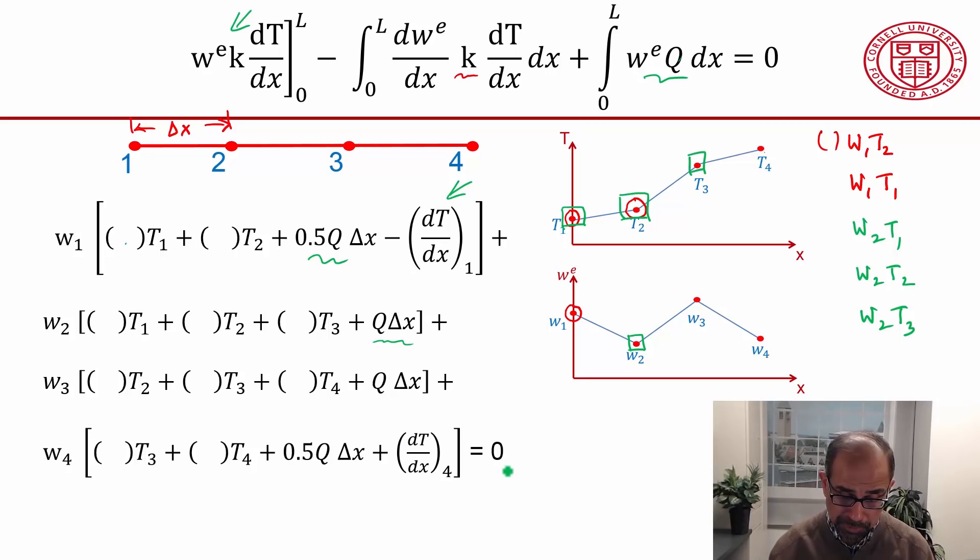We're trying to satisfy this for arbitrary w, which means that our nodal values here are arbitrary. If you want to satisfy this to be equal to zero for any values of w1, w2, w3, w4, the only way you can do this is each individual term is equal to zero.